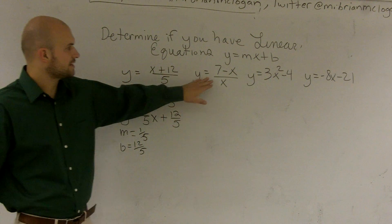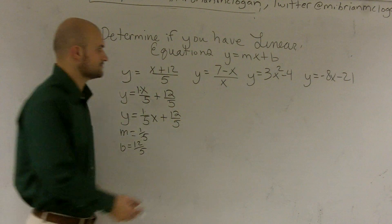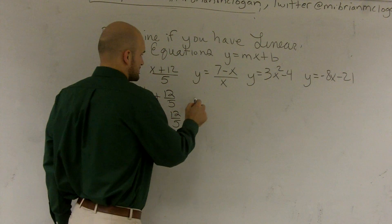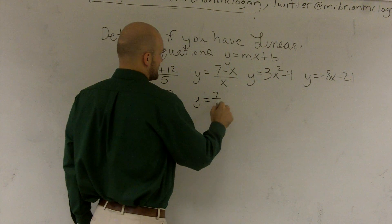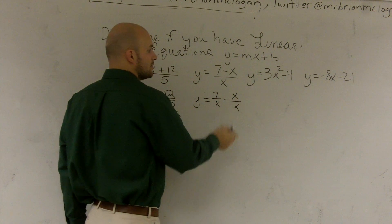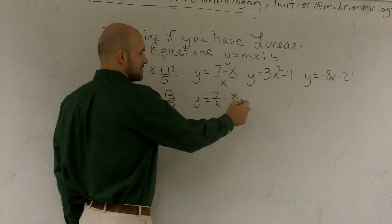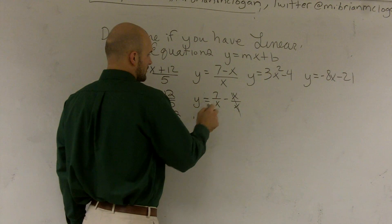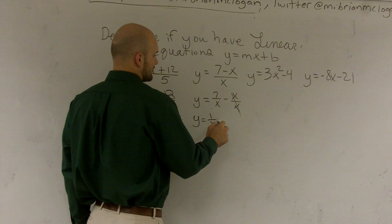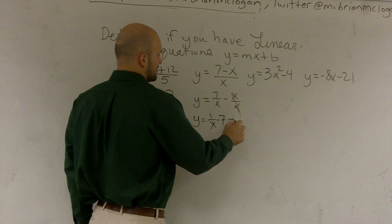Next problem. I look at this problem and I say, well, let's divide this out and see if I divide it out and see if it makes any difference. So y equals 7 over x minus x over x. Well, here my x's are going to cancel out to give me 1, right? So I can write this as y equals 1x times 7 minus 1.